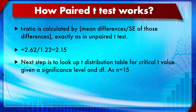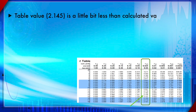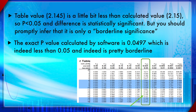Now we look up the critical t-value from the table. With df = 14 (since n = 15 and df = n − 1), the critical t-value is 2.145. The obtained t-ratio of 2.15 is very slightly greater than 2.145, so the result is statistically significant — but only barely. This is a borderline case. Using software like Microsoft Excel, the exact p-value is 0.0497, which is very near 0.05.